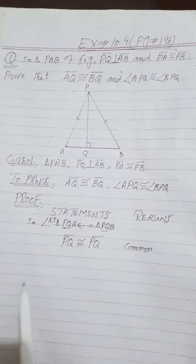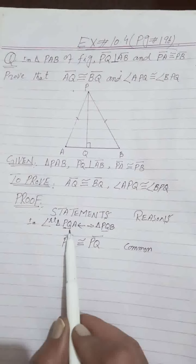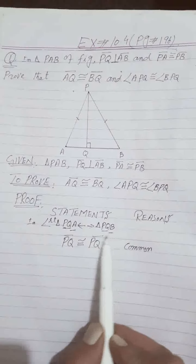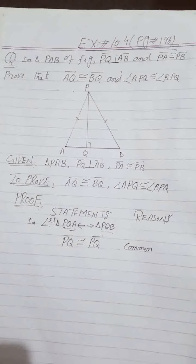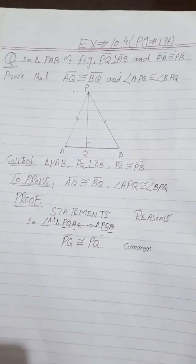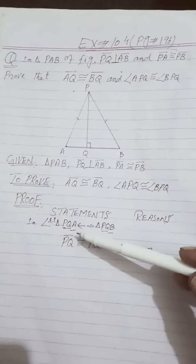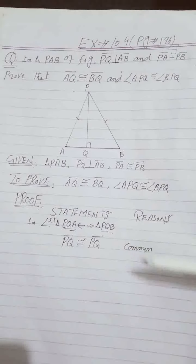The next pair is QA and QB. QA and QB are not given — this is what we need to prove, so we cannot use it. We must reject this pair. We move to the third pair: PA and PB.